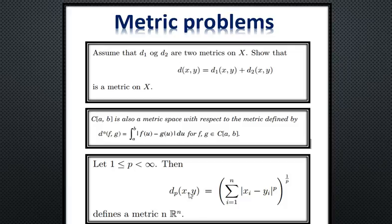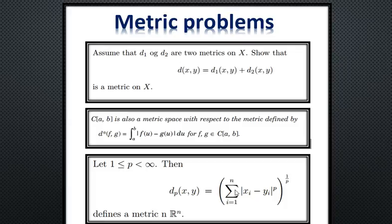We can also generalize the Euclidean metric by considering the Lp metric, where p ranges from 1 to infinity. When p = 1 this is the Euclidean metric on ℝ, when p = 2 this is the Euclidean metric on ℝ², and this can be generalized easily to the Euclidean metric on any given space.